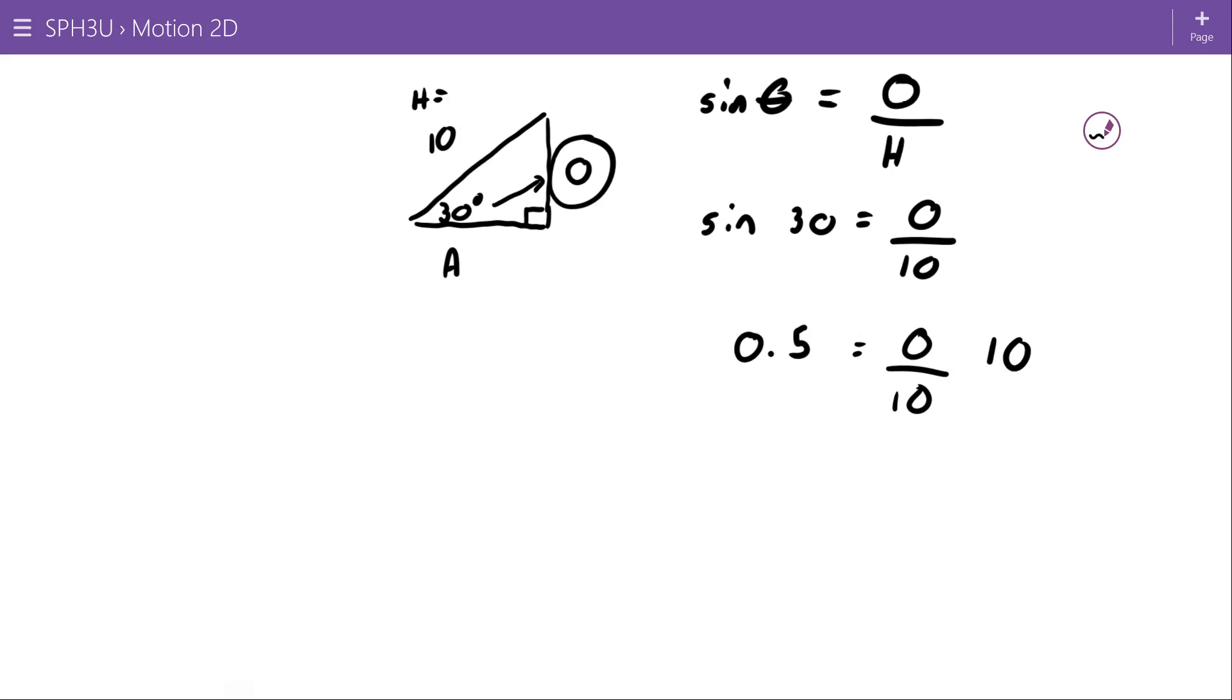So if I multiply both sides by 10, I get the length of my opposite to be 5. So that is equal to 5.